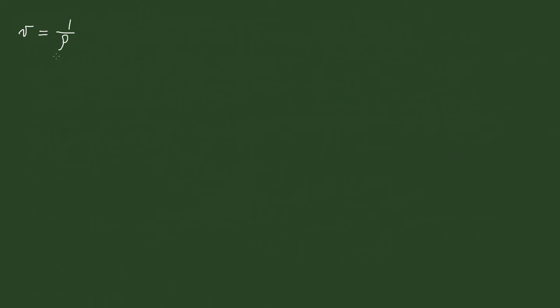Those last two assumptions are what will allow us to solve the problem. We know that the specific volume, denoted by this little script V, is going to be 1 over the density — the inverse of the density. And so if the volumes are additive and the mixture is homogenous, meaning it's the same at any point in the mixture, we can calculate the average specific volume, which is going to be equal to the inverse of the average density.